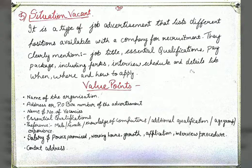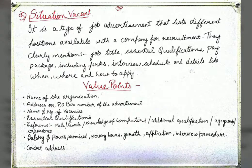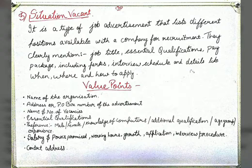The value points for this advertisement are: the name of the organization, the address and PO box number, the name and number of vacancies — for example, three places for clerks or two for peons — and the essential qualifications required for the position. You can also state your preference such as male or female, knowledge of computers, additional qualifications, age group, or experience.